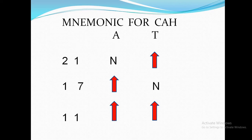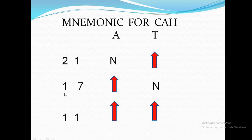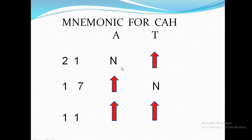I use a simple mnemonic for the different enzyme deficiencies in CAH. Write 21, 17, and 11. For the digit '1', use an upward arrow; for all other digits, use a normal sign. Put 'A' and 'T' on top — A for aldosterone and T for testosterone. For 11 (both digits are '1'), both A and T have upward arrows, meaning both aldosterone and testosterone are elevated.